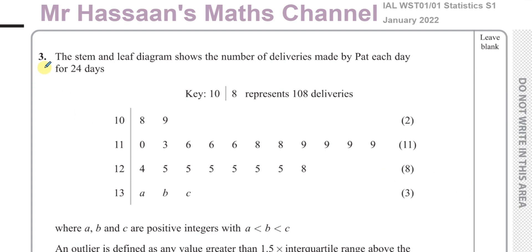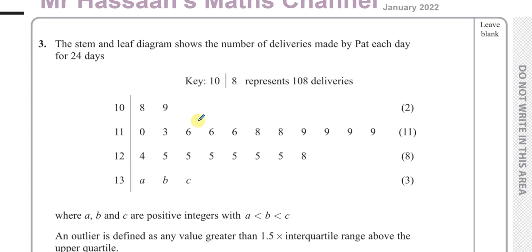Welcome back, this is Mr. Hassan's Maths Channel and I'm now answering question number 3 from the Statistics S1 International A-Level January 2022 EDEXCEL exam. This question is about a stem and leaf diagram which shows the number of deliveries made by Pat each day for 24 days. The key here is the stem is basically the hundreds and the tens, and the leaf is the units. So 10 in the stem and 8 in the leaf means 108.